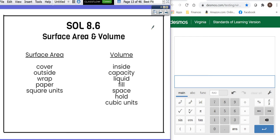Surface area means the outside of a figure, the cover of a figure, or wrap, or to use paper to wrap it, or anything that is square units, like feet squared. Volume is how much can fit inside of something, the capacity, the liquid, how much to fill, space, hold, or cubic units which means units to the third power.